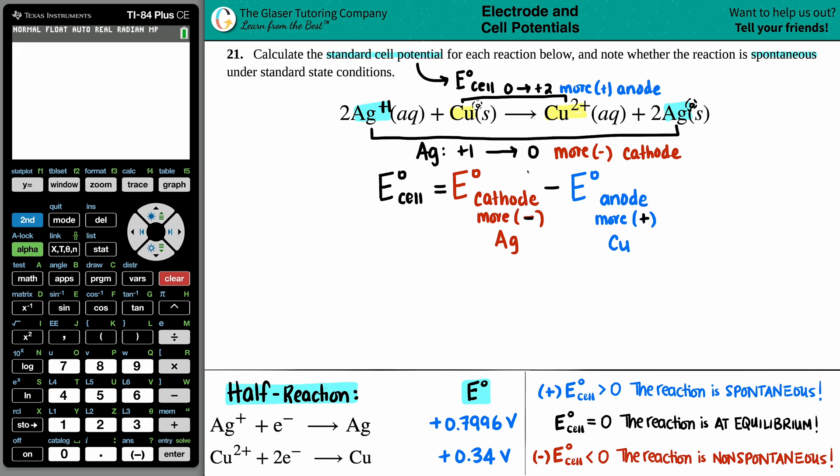Now just know when we are doing this formula, cathode minus anode, if you put the minus in there, you do not have to flip the signs of your half reaction potentials. Where did these come from? I went in the back of the textbook to find the right ones for you guys, but we couldn't have done this without looking up these E values. So I'm using cathode minus anode because I don't want to change any signs. I like to keep everything simple.